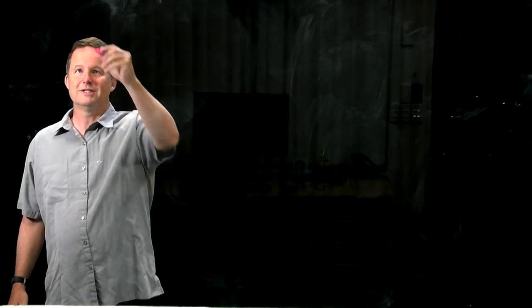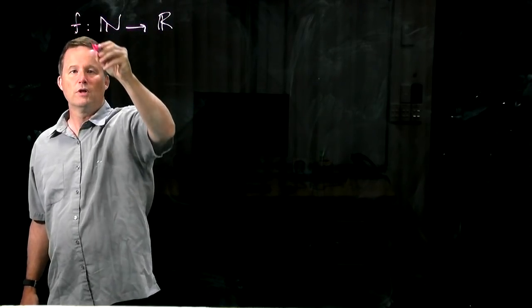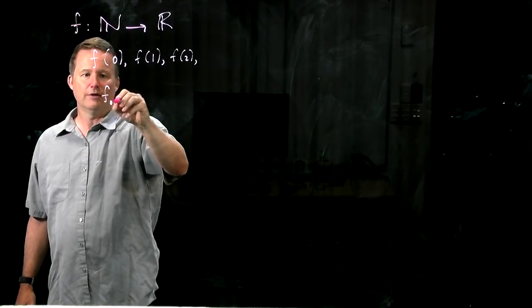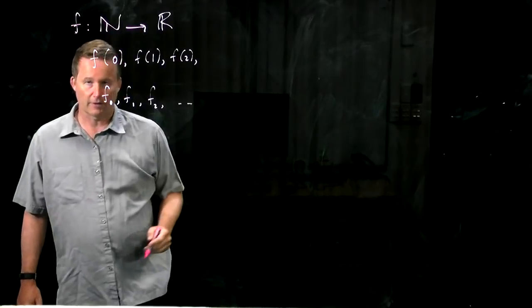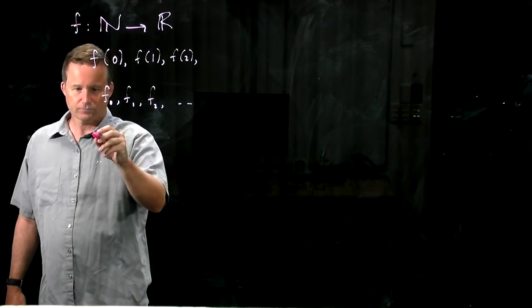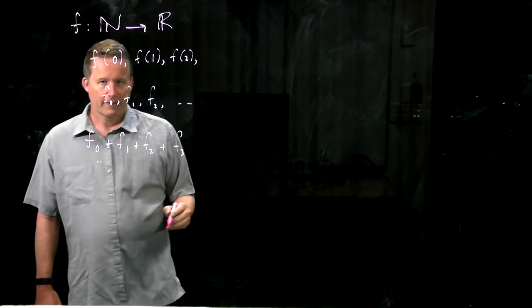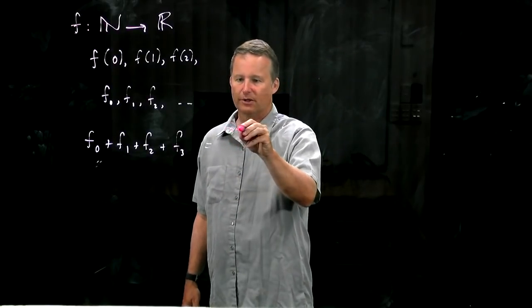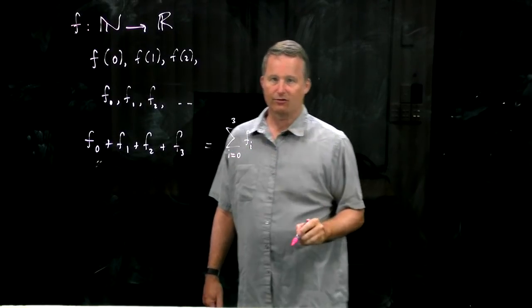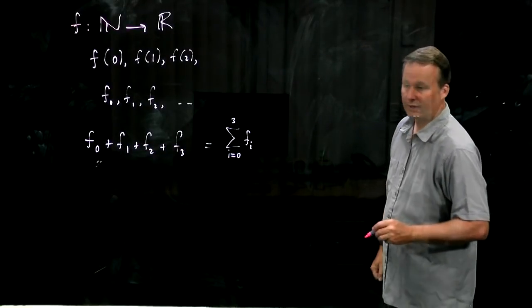We're going to look at some other special types of functions which are called sequences. A sequence is just a function from the natural numbers to the real numbers. Instead of writing f(0), f(1), f(2), sometimes we just write f sub 0, f sub 1. You would have seen that before, probably. One of the key things that we can do with these sequences is add up terms from them. For example, f0 plus f1 plus f2 plus f3, and we will simplify our notation by using this sigma notation, where we have a running variable i summing as i goes from 0 to 3 over fi. We're going to make quite a lot of use of that.